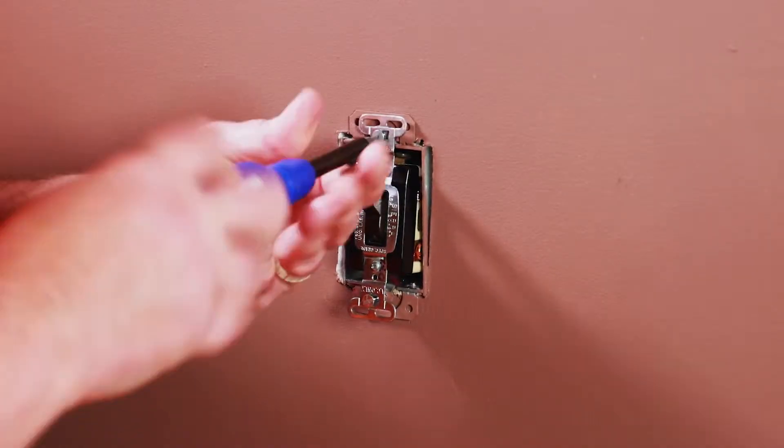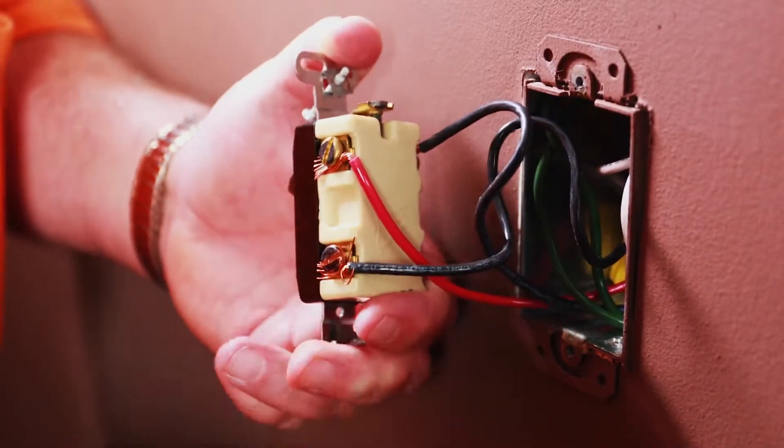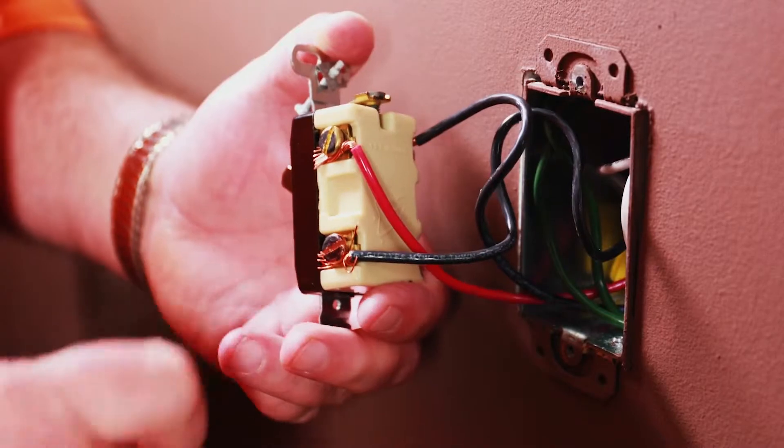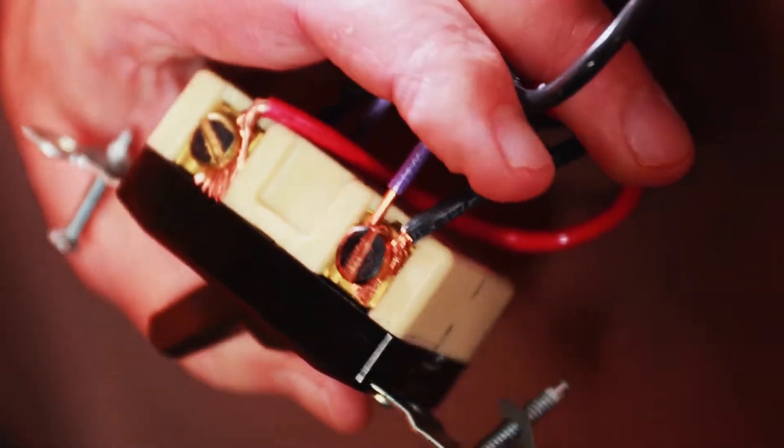To start, remove the wall switch from the line side without disconnecting the wires. Now, locate the common input on the existing switch. Take the jumper wire that was included in the Ascend box and connect it to that common input.